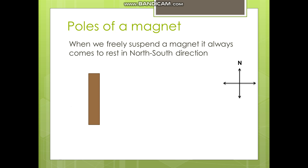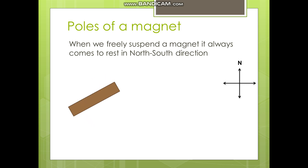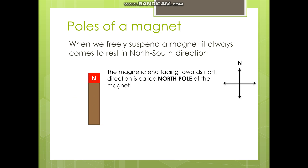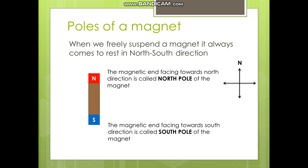A magnet always has two poles — one is the north pole and another is the south pole. To identify which end is the north pole and which is the south pole, when we suspend a magnet freely, it always rests in the north and south direction. The magnetic end facing towards the north direction is called the north pole of the magnet, and the magnetic end facing towards the south direction is called the south pole of the magnet.